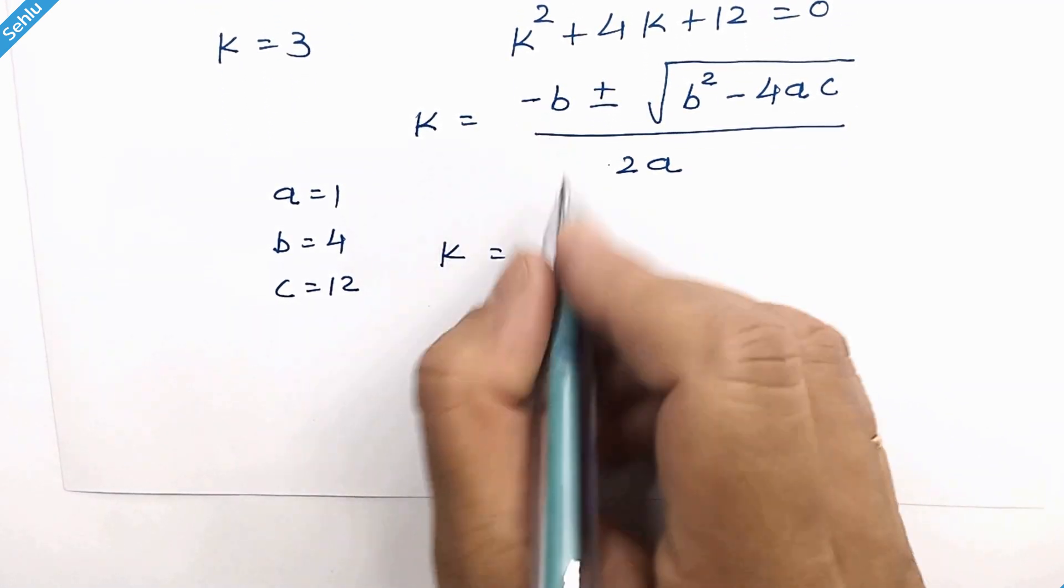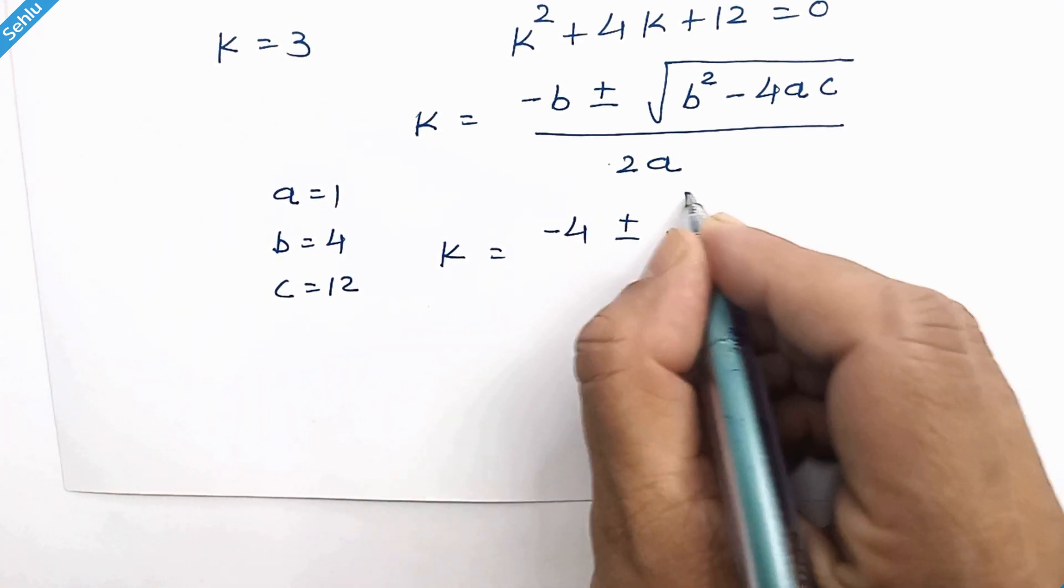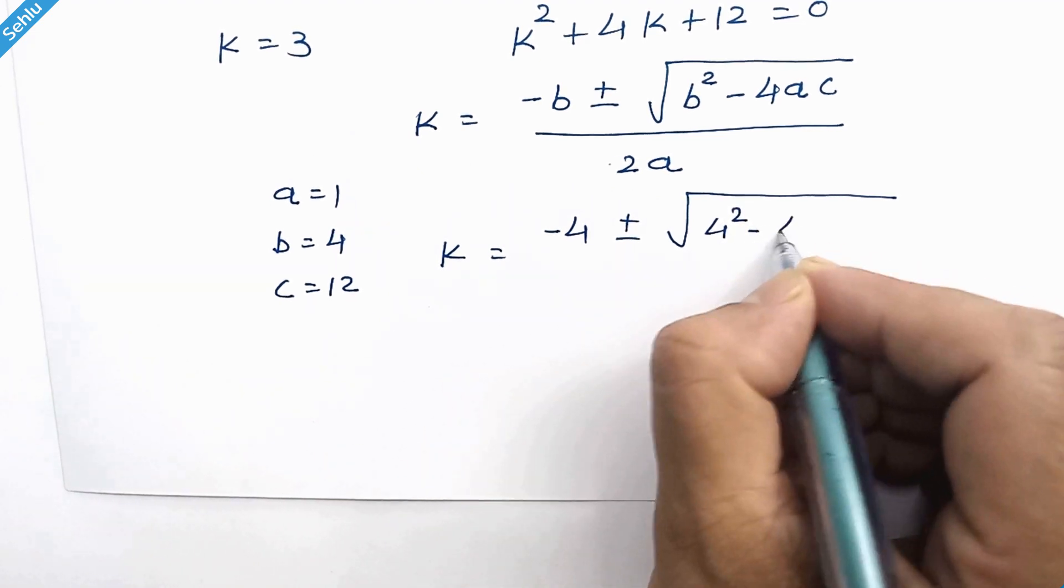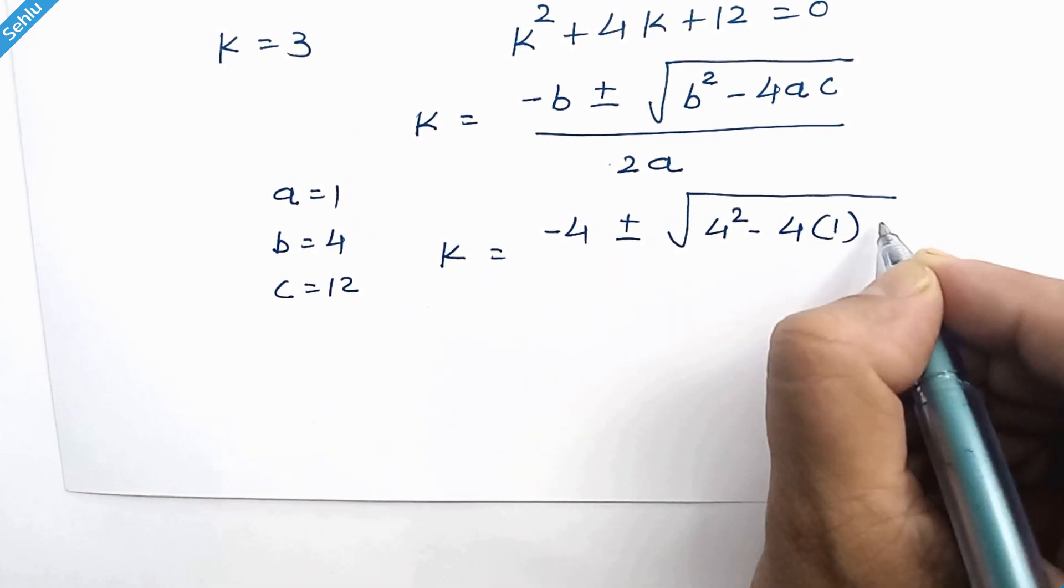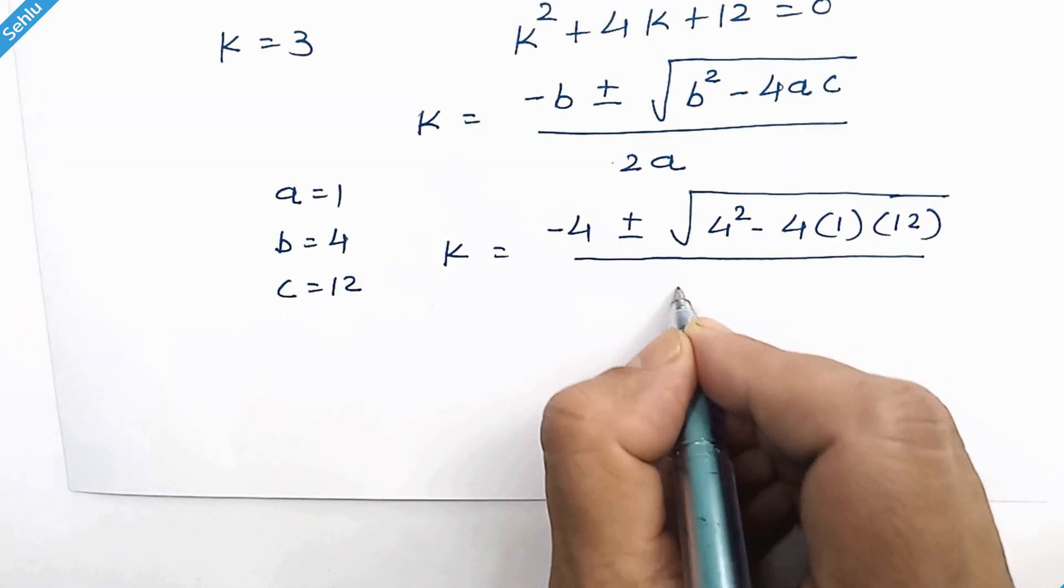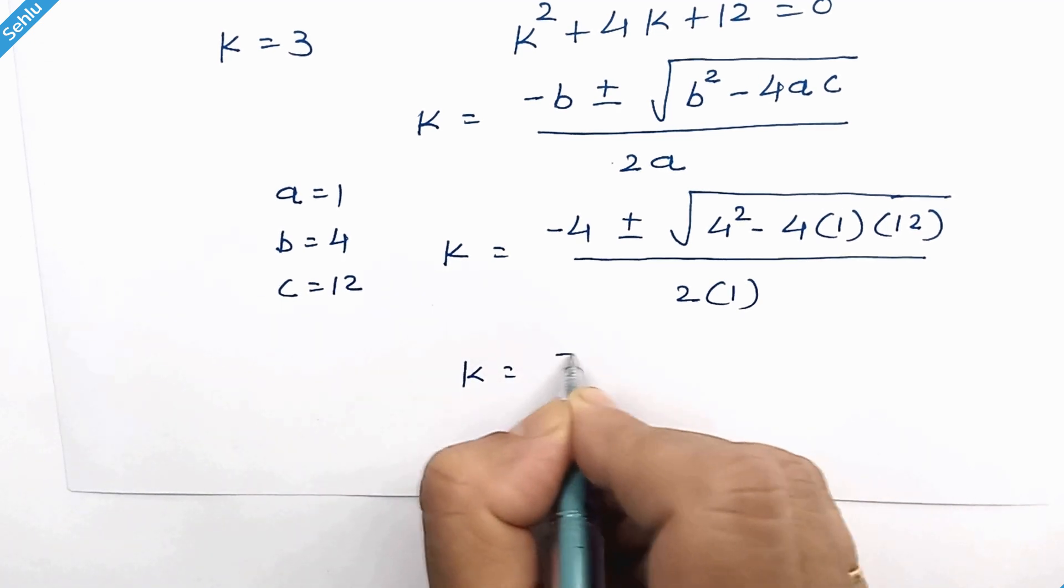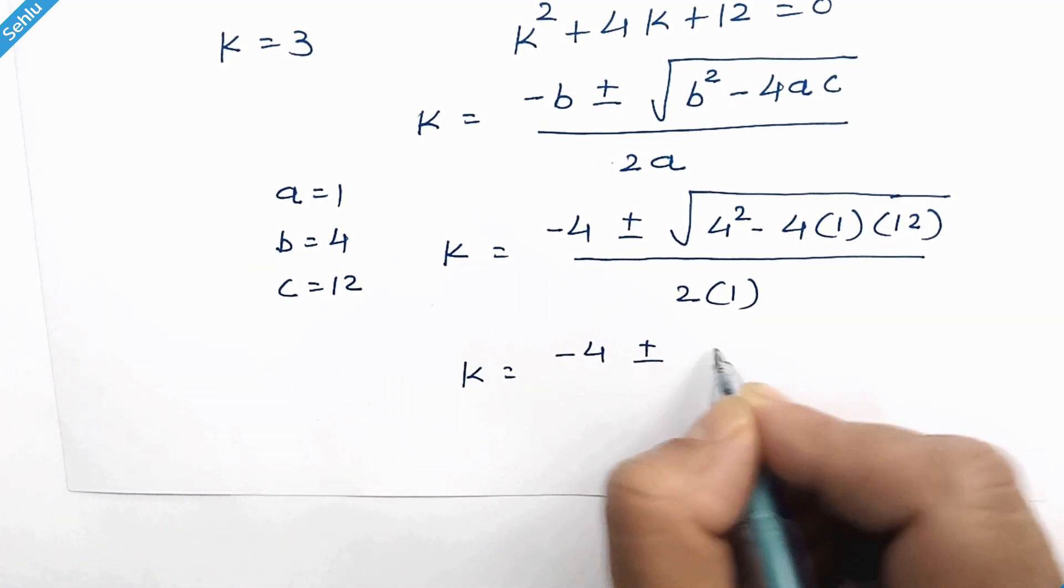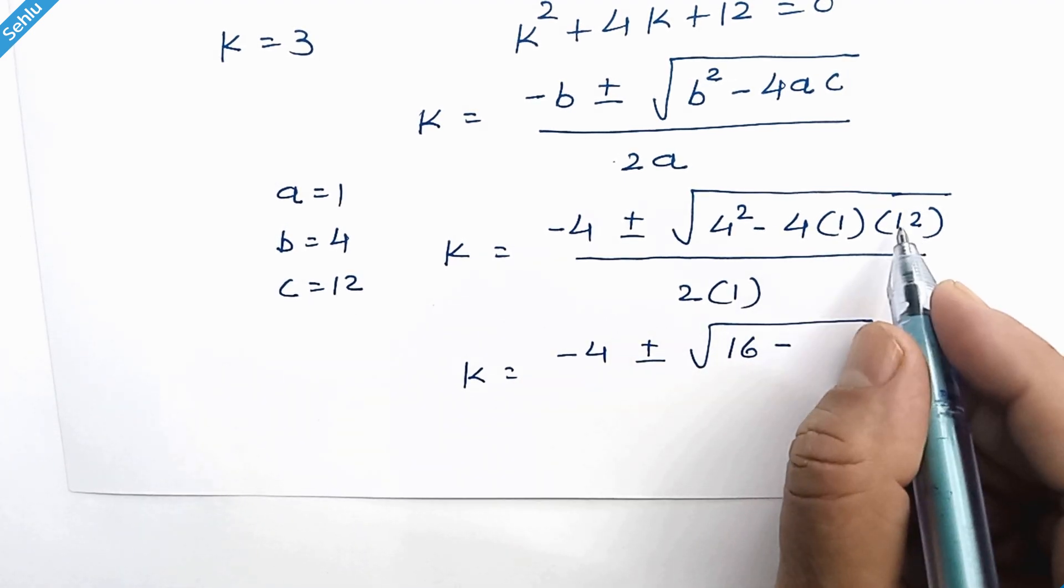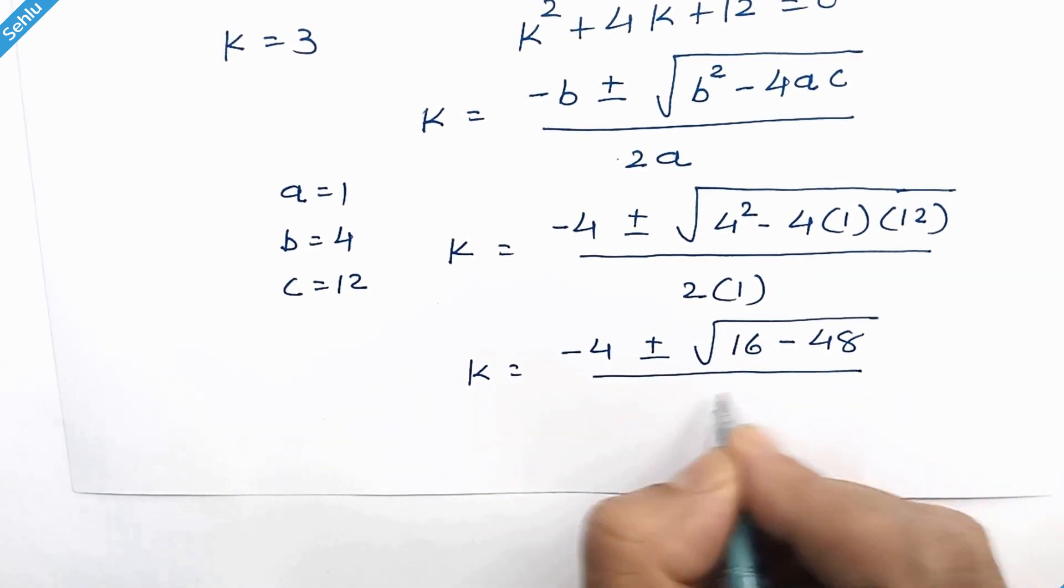So here we have negative b, so negative 4. b square, so 4 square minus 4a is 1 and c is 12. So it will be negative 4 plus or minus square root of 4 square is 16 and 4 multiplied by 12 is 48 over 2.